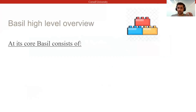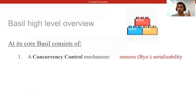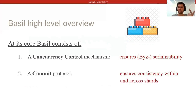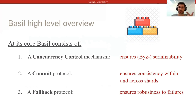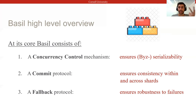At a high level, Basel is made up of three core components. First, a concurrency control mechanism that allows for optimistic parallelism but ensures Byzantine serializability. Second, a commit protocol integrated with the concurrency control protocol to avoid redundant coordination and efficiently ensure consistency across shard replicas and across shards. And lastly, a fallback protocol that allows clients to retain independent operability and liveness in the face of Byzantine failures.